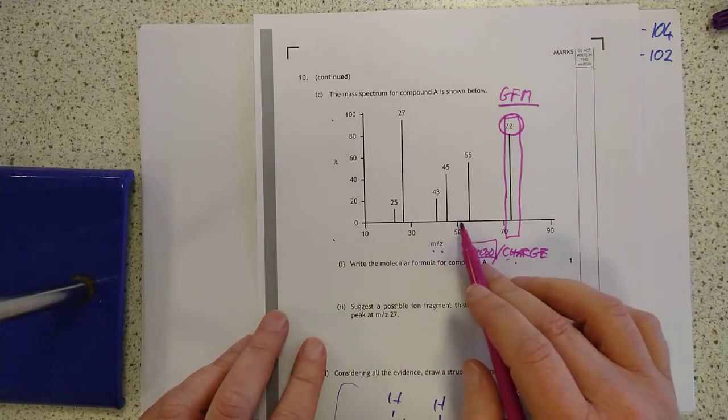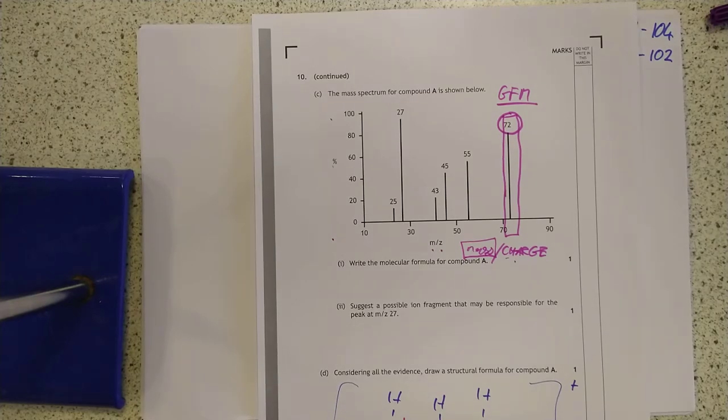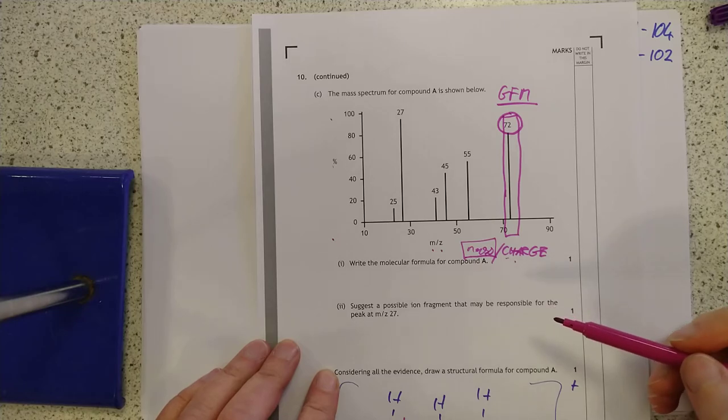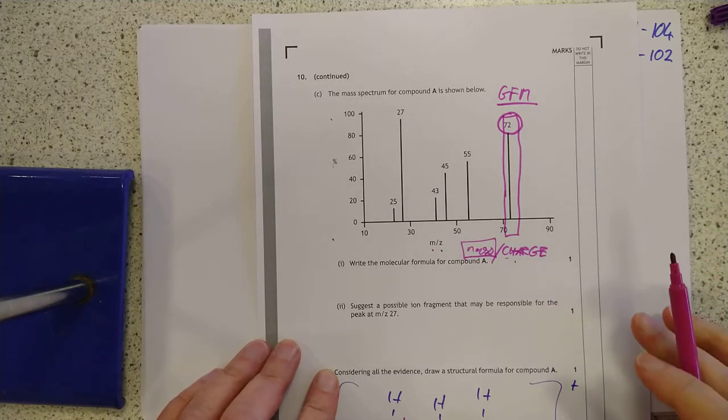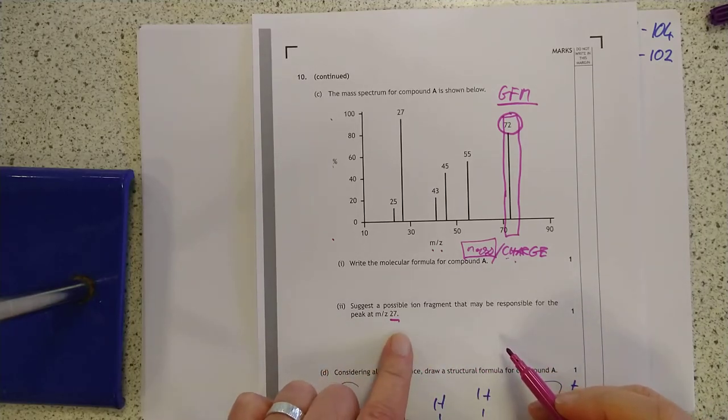And these are all smaller fragments of this molecule that has broken off. So this was a molecule with multiple C's and H's and an O as well, and a couple of O's as well. We'll come back to it another day. So we're looking for a possible ion fragment that has a mass of 27.